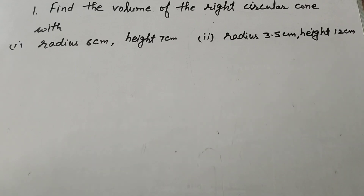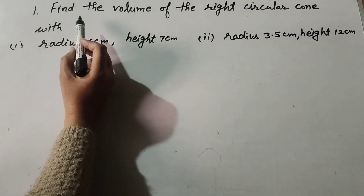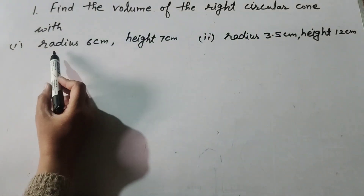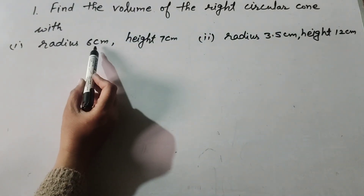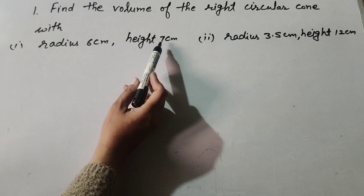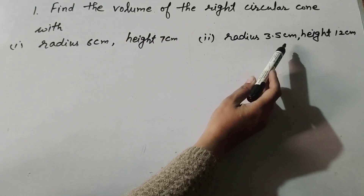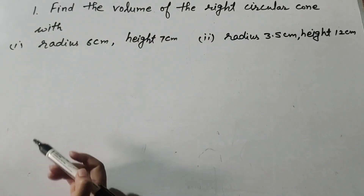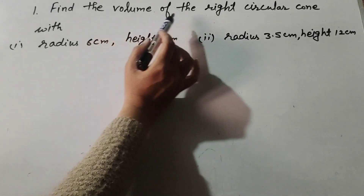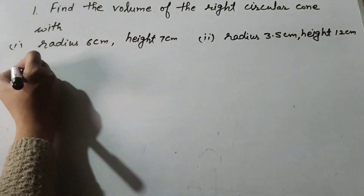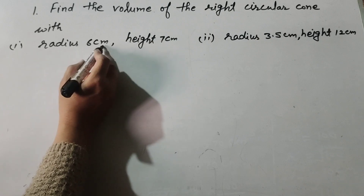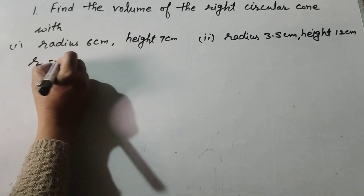Hello friends, welcome to my channel. In this video we discuss finding the volume of a right circular cone. Two questions are given: first, radius 6 centimeter and height 7 centimeter; second, radius 3.5 centimeter and height 12 centimeter.